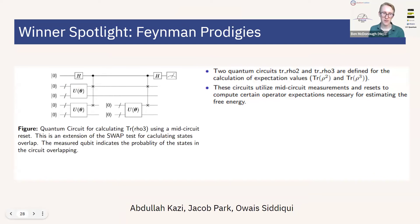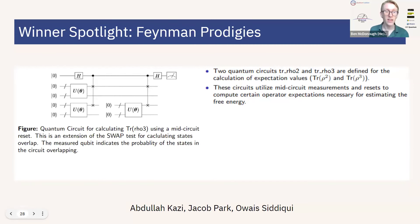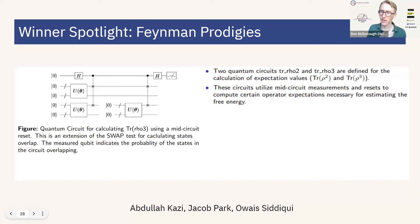Our second spotlight is the Feynman Prodigies — Abdullah Kadzi, Jacob Park, and Oya Siddiqui. What we were impressed with in this project is that it had a relatively ambitious scope and a very interesting use of dynamic circuits. This project was about using a variational free energy eigensolver to estimate the Gibbs free energy of an Ising model. The way that dynamic circuits were applied was to estimate observables that have a higher order in the density matrix — specifically, in the expansion of the free energy, there is the trace of the density operator cubed. To measure this, there is a swap test-like circuit that relies on mid-circuit measurements and unconditional resets. We liked this application of dynamic circuits and were impressed with how ambitious the project was.